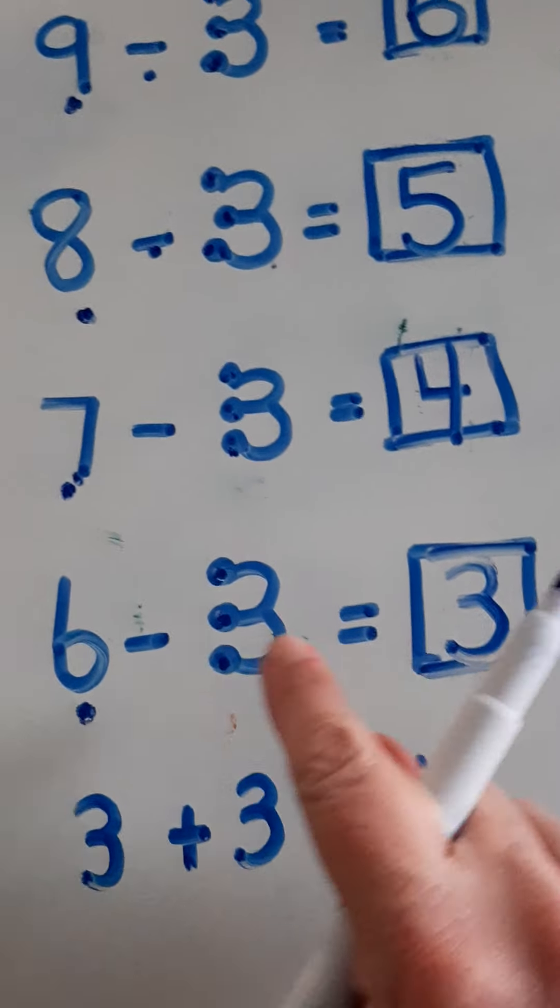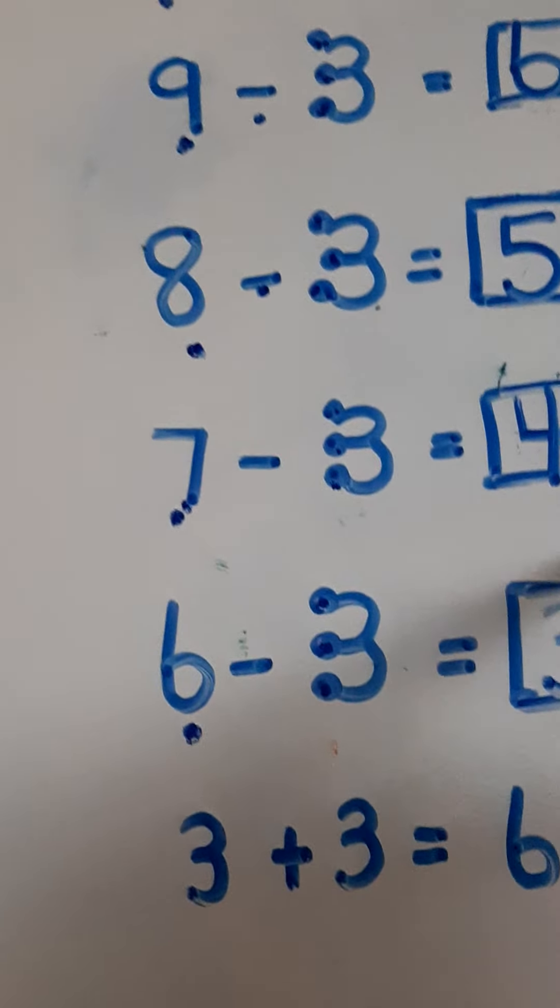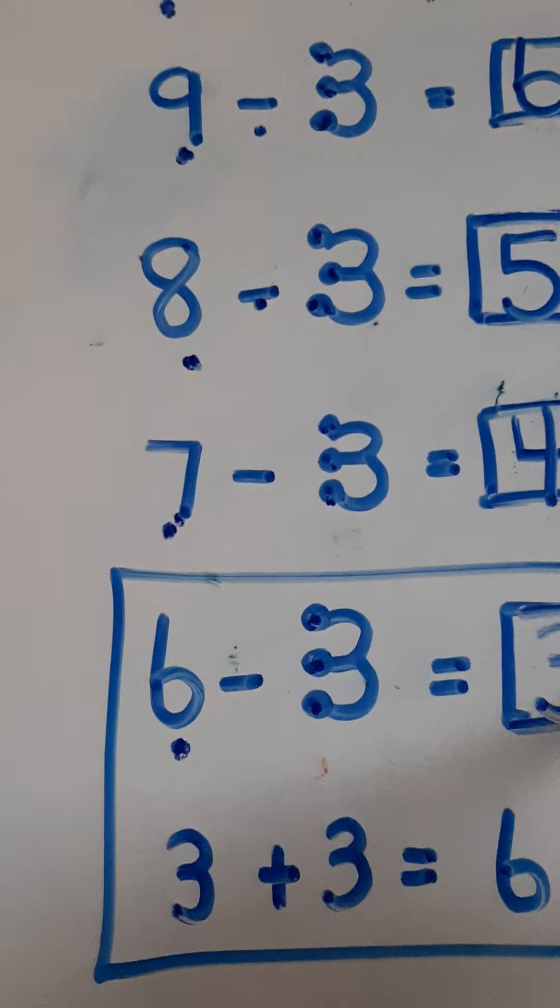Let's try 6 take away 3. Tap 6 and count backwards: 5, 4, 3. Six take away 3 equals 3.